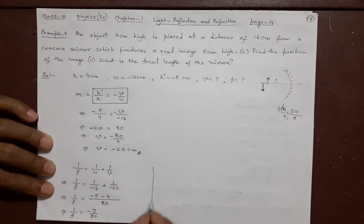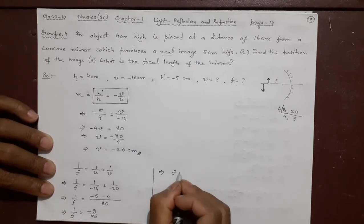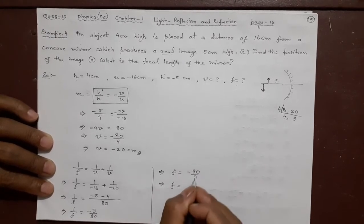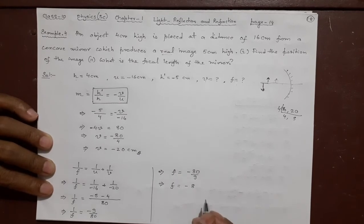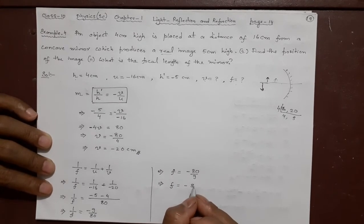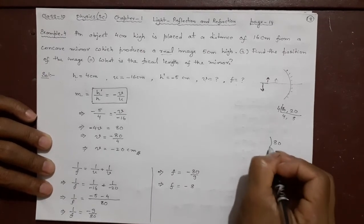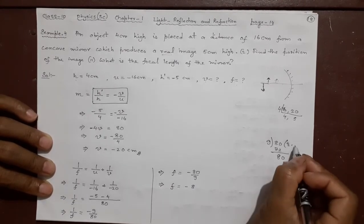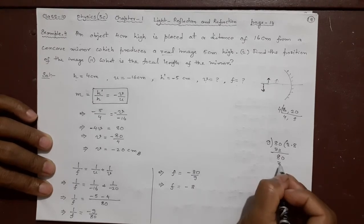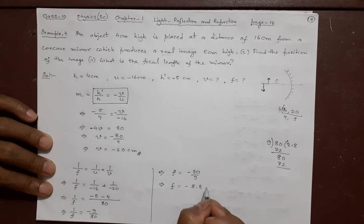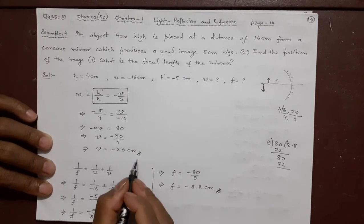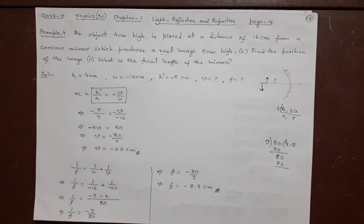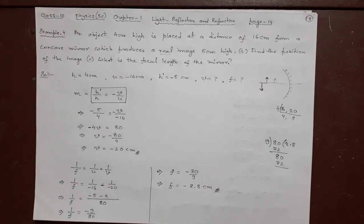I will continue here. This side. F is equal to minus 80 by 9. You can leave it like this also. But if you want it, you can divide. 9 9s are 81. So 9 8s are. 9 8s are 72. Minus 80 minus 72 will be. You just divide it like this. 8 remains. Point 80 again. 8.88 like that. It will continue, isn't it? So 8 point. You can write 8 centimeter negative answer. So you got this answer. Find the position of the image. Got. What is the focal length of the mirror? You got. This is all you need. This will carry three marks in your exam if it is asked like this. Thank you.